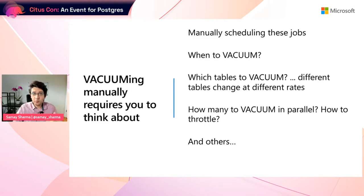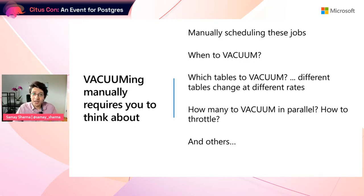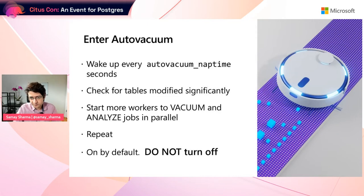You can run the vacuum command manually to keep cleaning up your database, but then you have a ton of things to think about: when do I schedule these jobs, how many jobs do I schedule, which tables need to be vacuumed when, because each table is different. When you run the vacuum you also need to decide how fast to let it go — do I throttle or not. All of these decisions become very cumbersome if you write your own scripts, which is why Postgres ships with something called autovacuum.